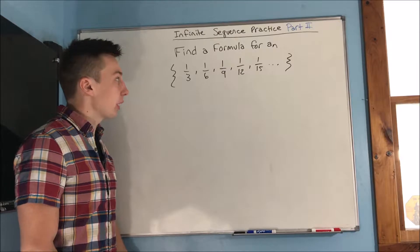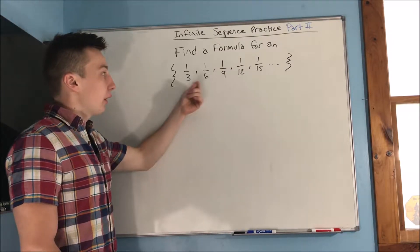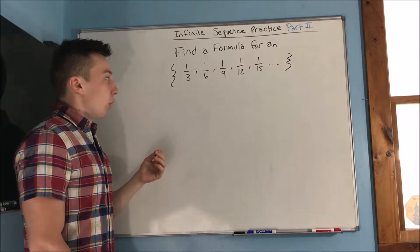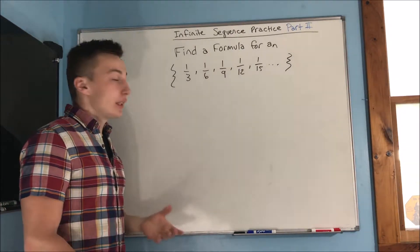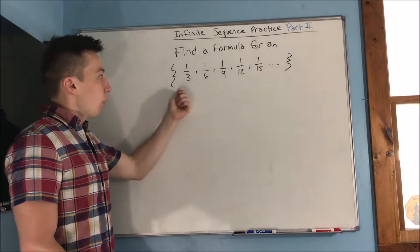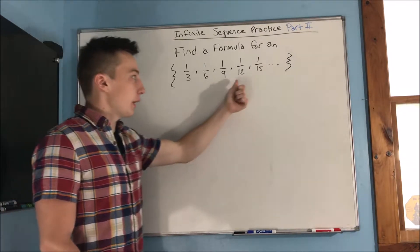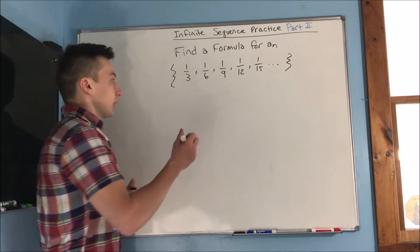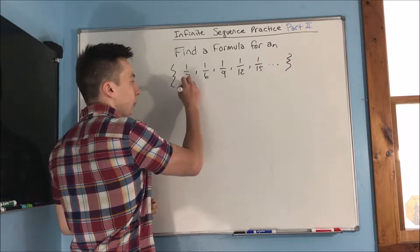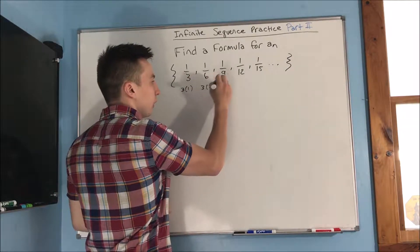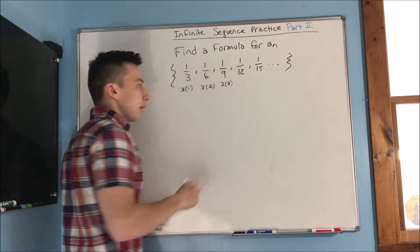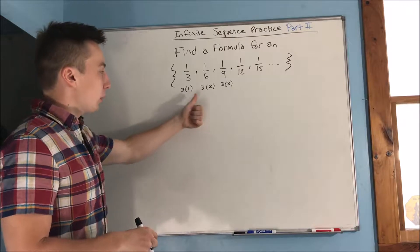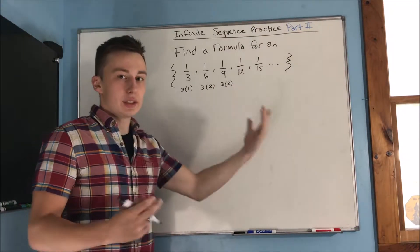And our first problem here, our infinite sequence is one-third, one-sixth, one-ninth, one-twelfth and so on. So really there's only one difference here, and that's that you see we're going up by multiples of three on the bottom. So this is kind of the same thing as just three times one, three times two, three times three, right? So you see that as the terms increase, we're having that number that we're multiplying three by, and that's increasing too.